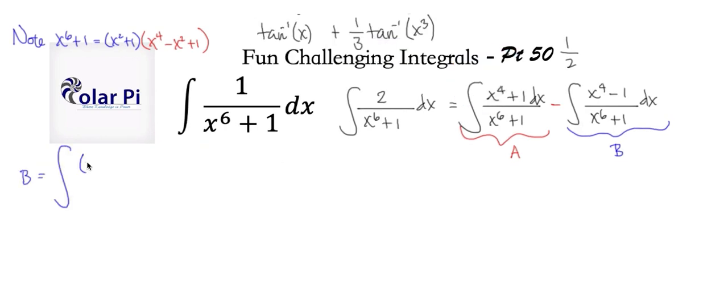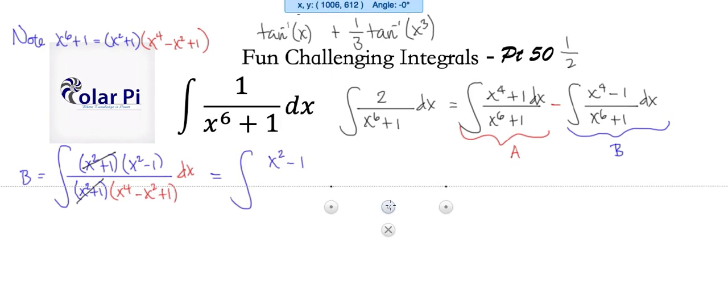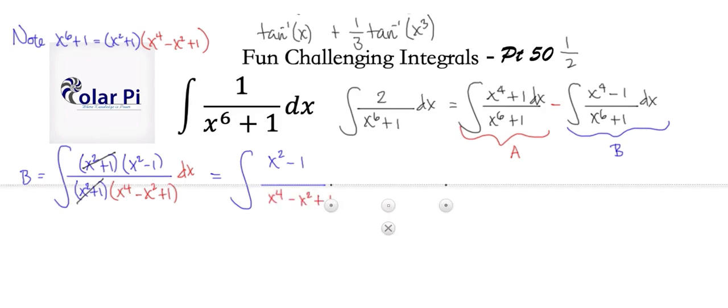Now on to B. So in B, notice that x to the fourth minus one, using difference of squares, can be written as x squared plus one times x squared minus one. Now our denominator we know can be factored in this fashion, and then we can do the cancellation here of x squared plus one since it appears numerator and denominator. So what we have is going to be this here.